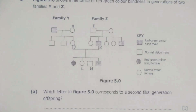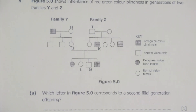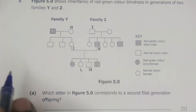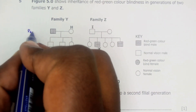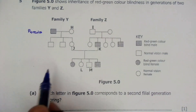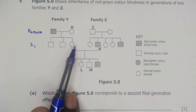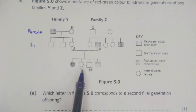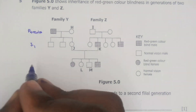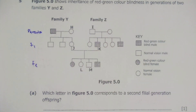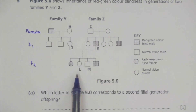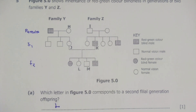Our first question asks us to say which letter in figure 5.0 corresponds to a second filial generation offspring. We start with the family tree — the parents at the top, then their offspring which form the first generation F1. Then J and K from families Y and Z get married and have children, and those children are F2. From the diagram, the second filial generation includes A, L, and M, so we can choose any letter — we'll go with A or L.